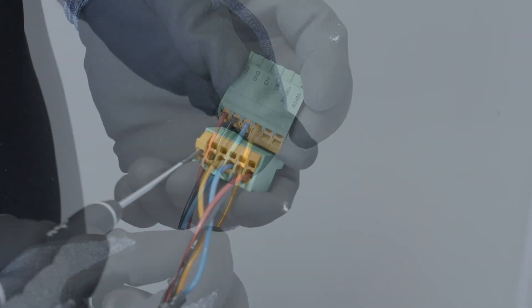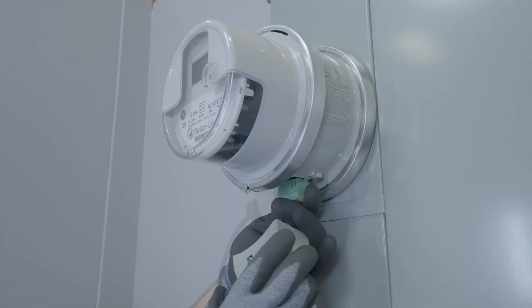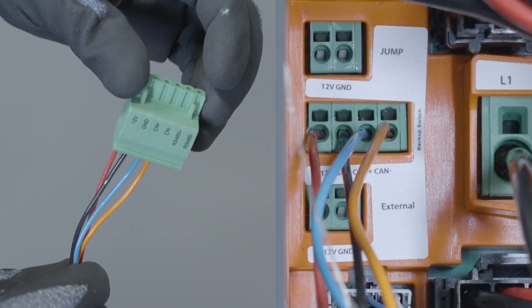Terminate the other end of the communication cable in backup gateway or backup switch, matching the wiring pattern used inside of the solar assembly.